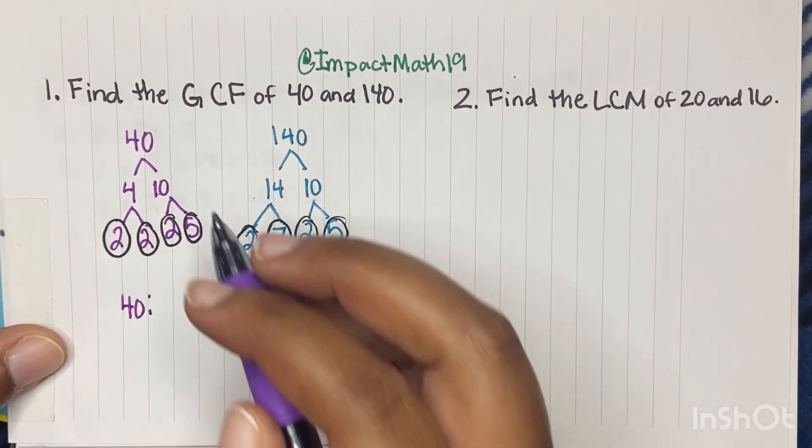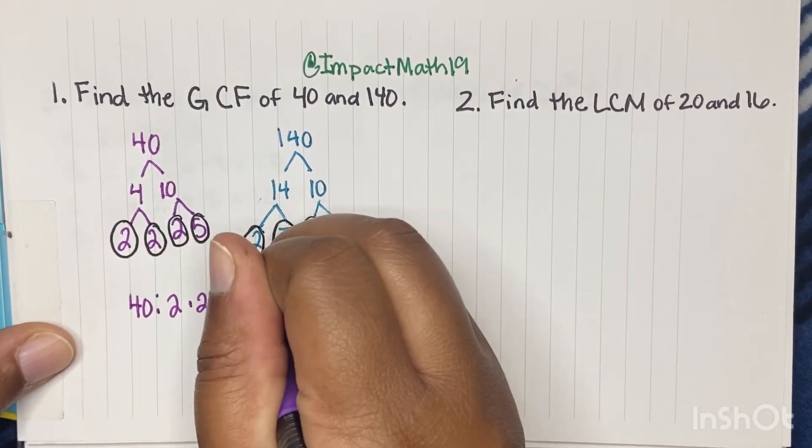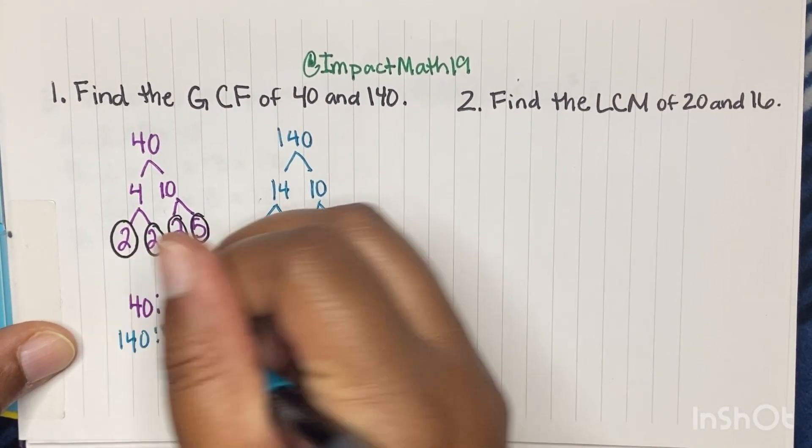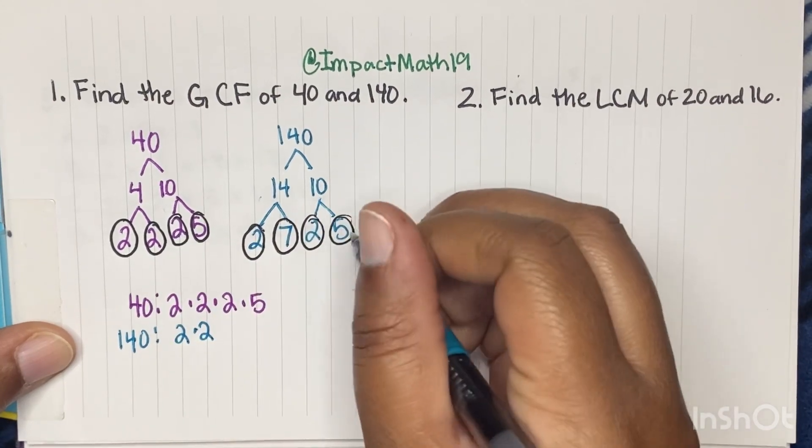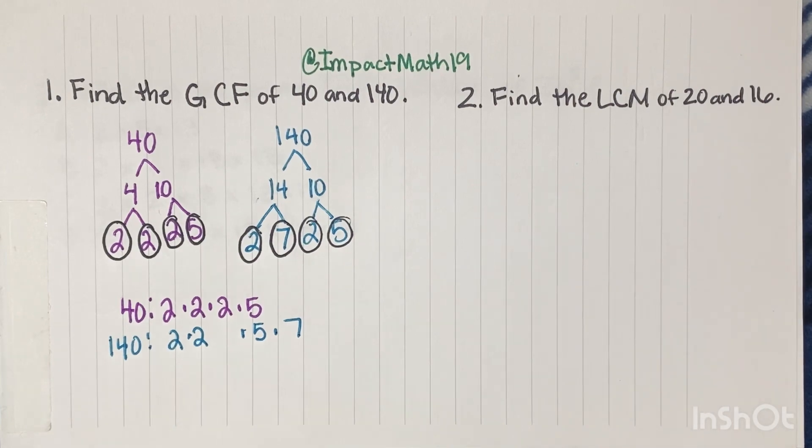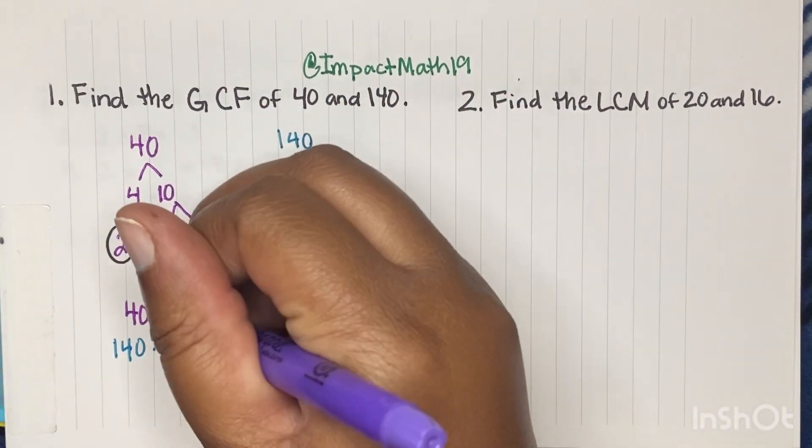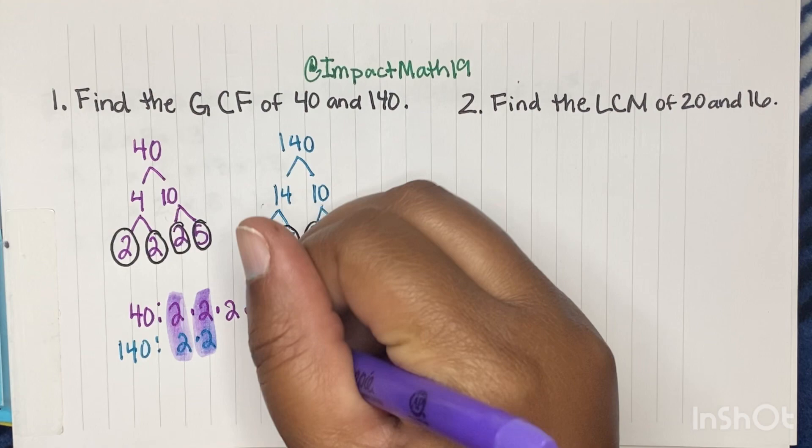40 has 2 times 2 times 2 times 5. And then 140 has 2 2s, has 1 5, and a 7.